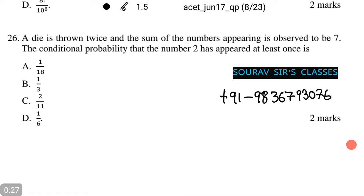A die is thrown twice and the sum of the numbers appearing is observed to be 7. The conditional probability that the number 2 has appeared at least once is among the following options.